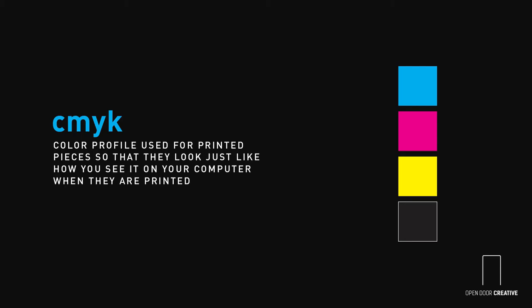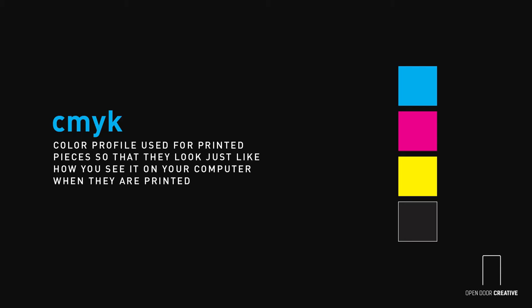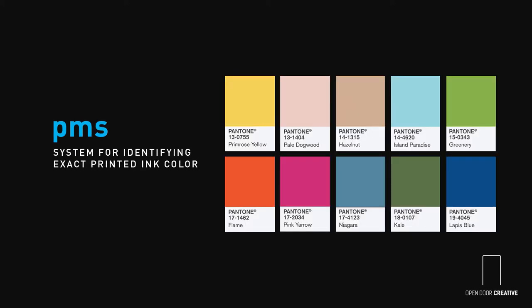CMYK is the color profile you will want to use on printed pieces so that they look just how they do on your computer screen when they're printed. On the flip side of CMYK is RGB, the color profile you should use for the internet and broadcast. You have a broader range of color here, especially those bright, rich tones that you can't get on printed pieces.